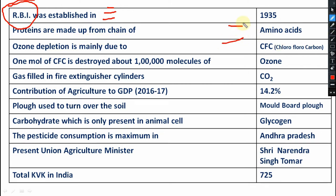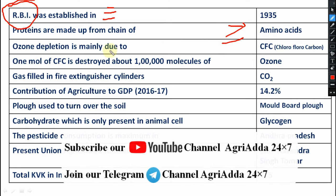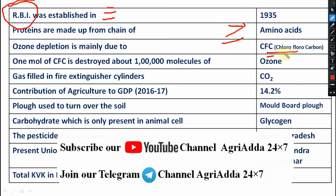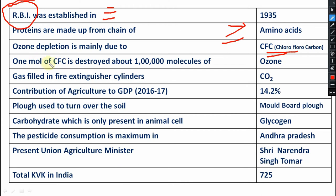Proteins are made up of chains of amino acids — everyone knows this basic question. Ozone depletion is mainly due to CFC — chlorofluorocarbon. One mole of CFC destroys about one lakh molecules of ozone (O3). Gas filled in a fire extinguisher — that is carbon dioxide.